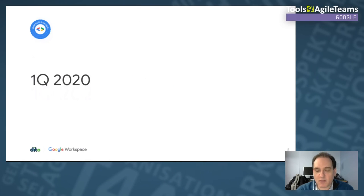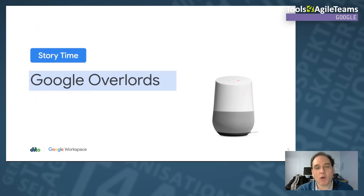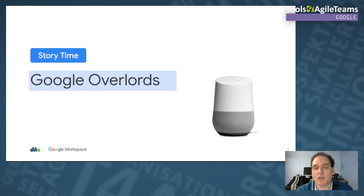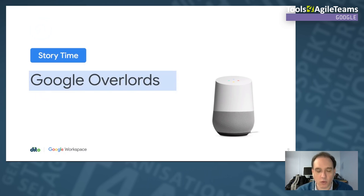Let's start with Q1 2020, going all the way back to January. Everything I talk about here is publicly available information — I don't discuss private information. I was an original tester with the Google Home, and a lot of times when doing that I'd have to ask Googlers whether certain things were public yet.